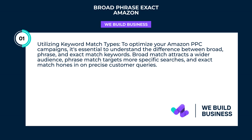Utilizing keyword match types to optimize your Amazon PPC campaigns, it's essential to understand the difference between broad, phrase, and exact match keywords. Broad match attracts a wider audience, phrase match targets more specific searches, and exact match hones in on precise customer queries.